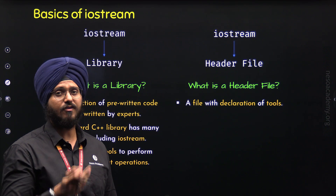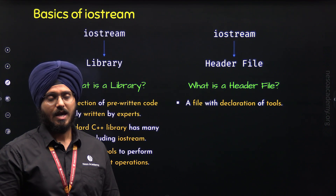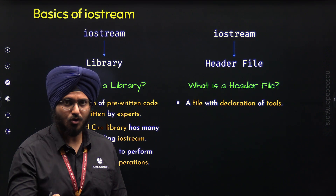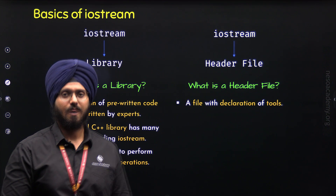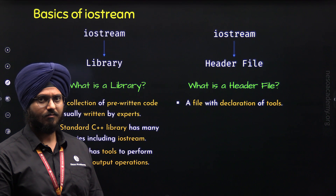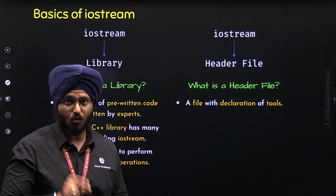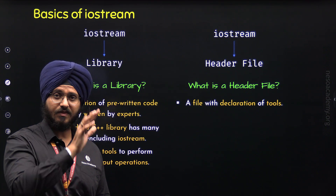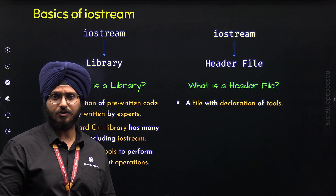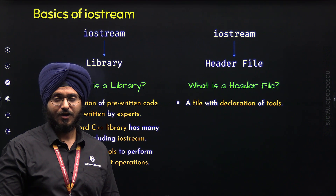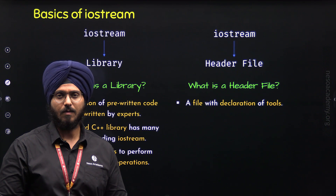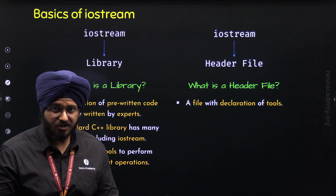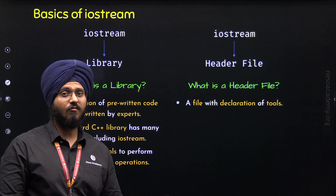Header files are needed to avoid errors from the compiler. If you want to use std::cout in your code, you need to define that code first. Let's say you want to use std::cout, but its definition is not available in your code — it is available in the Iostream library. How does the compiler know that this specific code is available in the Iostream library? The compiler will generate an error because std::cout is not defined in the code you have written.